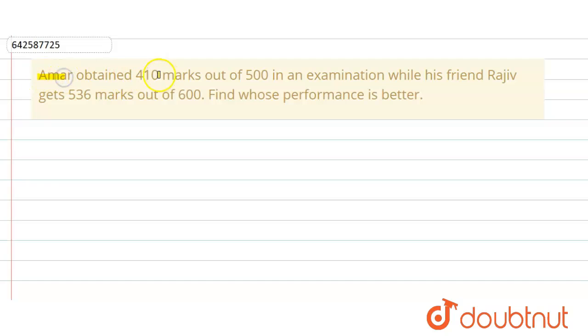In the given question, Amar obtained 410 marks out of 500 in an examination, while his friend Rajiv gets 536 marks out of 600. We have to find whose performance is better.